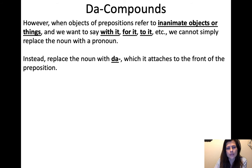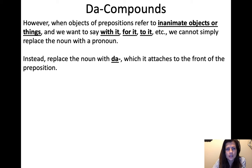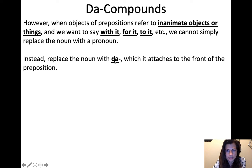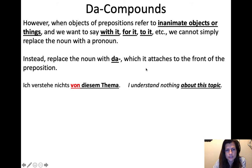But that only works for people. When the object of a preposition refers to an inanimate object, or an idea, or a thing — so not a person — then we want to say 'with it,' 'for it,' 'to it,' etc. We don't just replace the noun with the pronoun as you might expect. There's a whole different construction called a da-compound. You replace the noun with 'da,' and it attaches to the front of the preposition.